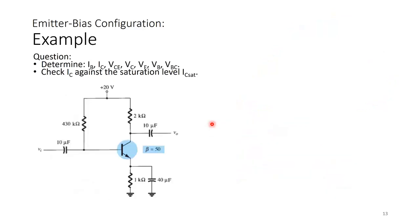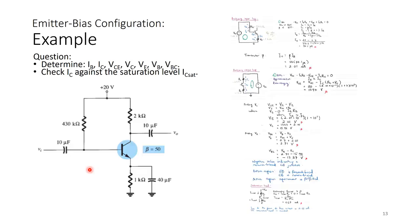We are now ready to handle an example. The emitter stabilized bias circuit has RB = 430 kΩ, RC = 2 kΩ, RE = 1 kΩ, and VCC = 20 V. We are required to find IB, IC, VCE, VC, VE, VB, and VBC related to the quiescent point, and check IC against the saturation level to determine whether the BJT operates in the active region or saturation.